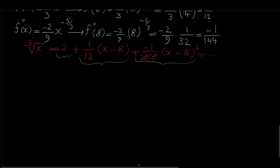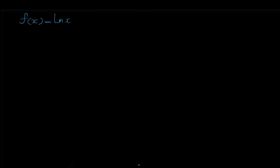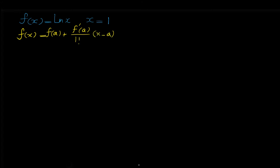Let's do another example. We want to find the Taylor series of the function ln of x about point a equals 1. The Taylor series of a function in general is f of a plus f prime of a over 1 factorial times x minus a, plus f double prime at a over 2 factorial times x minus a squared, and so on. Because we want the series about a equals 1, we replace every a with 1.